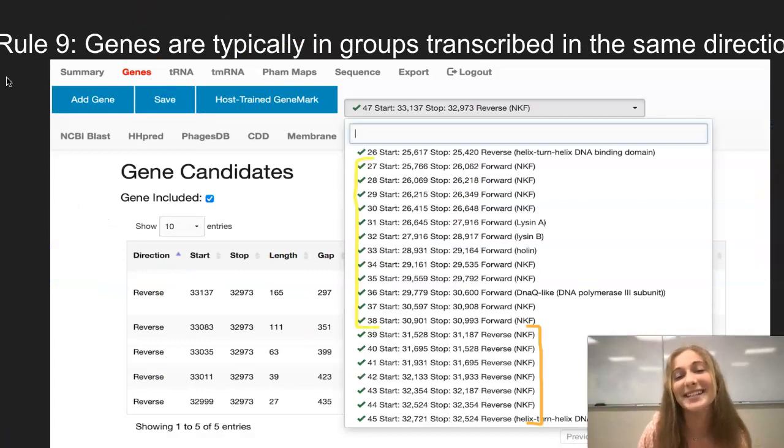Rule number 9 says that genes are typically grouped in the way that they are transcribed. On pecan, we can see how genes 27 through 38 are all in the forward direction. And then genes 39 through 45 are all in the reverse direction. It is very common to see genes grouped together like this. It is less common to see them switching from forward to reverse constantly.